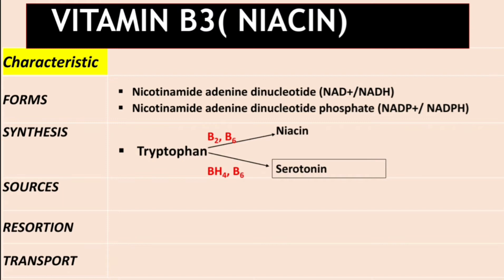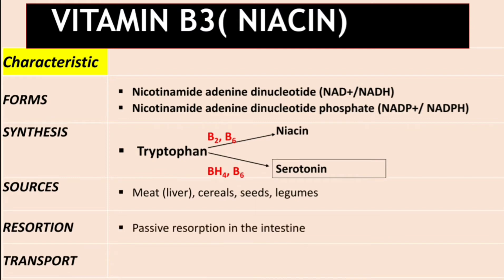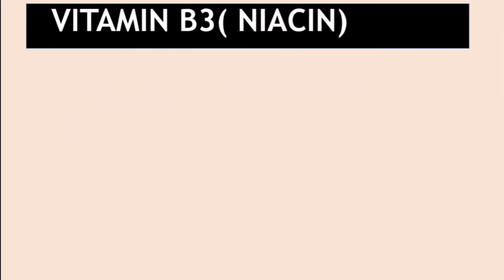Sources of Vitamin B3 include meat such as liver, cereals, seeds, and legumes. Absorption occurs through passive resorption in the intestines, and transport in blood is as nicotinate.